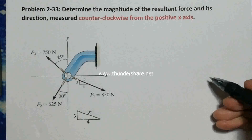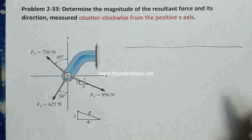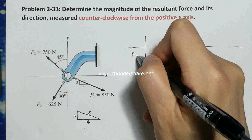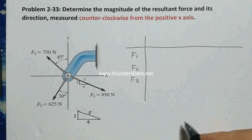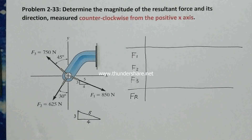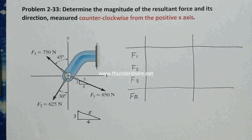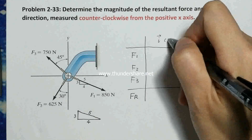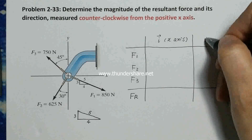First I'm going to draw a table. I'll put F1 here, followed by F2, F3, and draw a line for the resultant force. I'll divide this area into two columns — one for the x-axis and one for the y-axis.